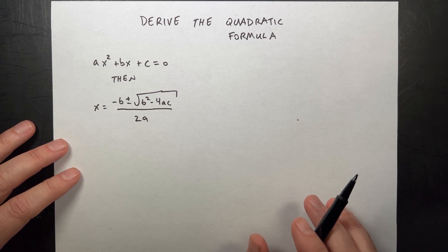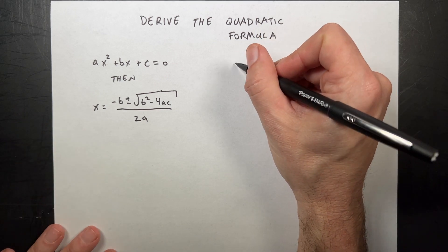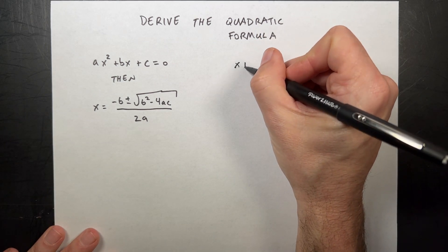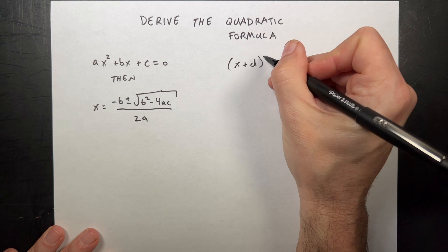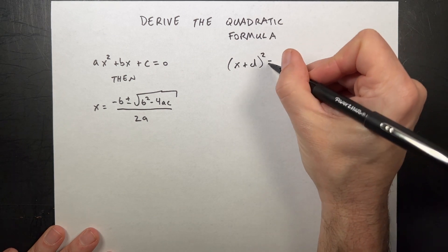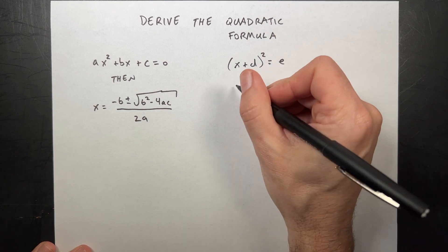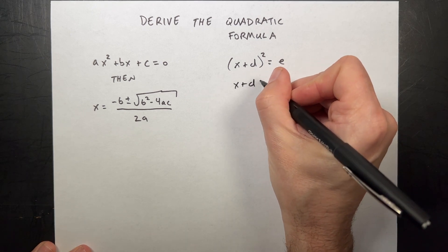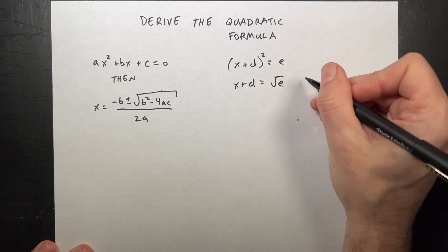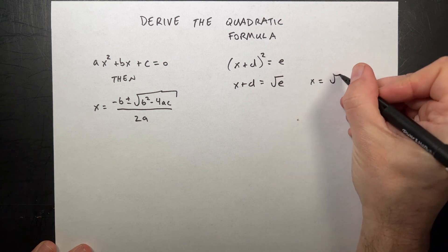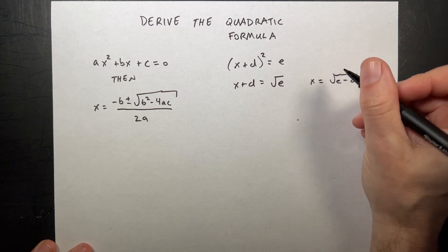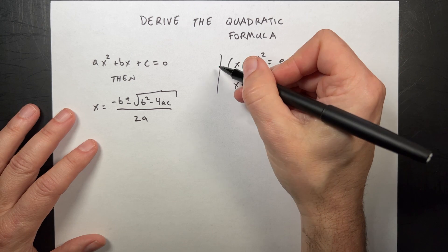So we're going to get this in the, if we got this in the form of, let's say, x plus d quantity squared equals something e, then I could solve for this, right? I could take the square root of both sides. I could say x plus d equals the square root of e, and then I could say x equals the square root of e minus d. That's what we want to do. This is how we're going to do it.